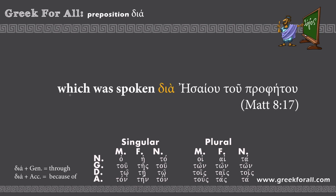Example from the Gospel of Matthew: 'which was spoken dia Esaiou tou prophetou.' Our preposition is followed by the proper name 'Esaiou,' meaning Isaiah. The ending is genitive, so we translate dia as 'through.' The phrase 'tou prophetou' means 'the prophet' — this is the genitive of apposition, further clarifying who Isaiah is. Full translation: 'which was spoken through Isaiah the prophet.'